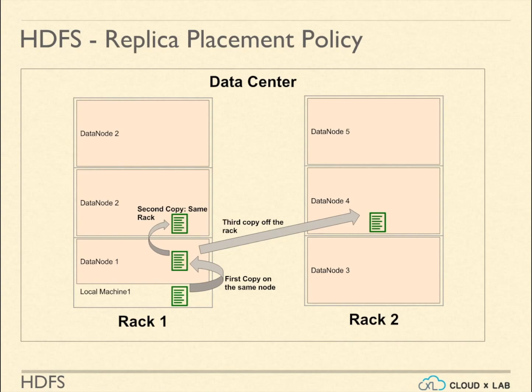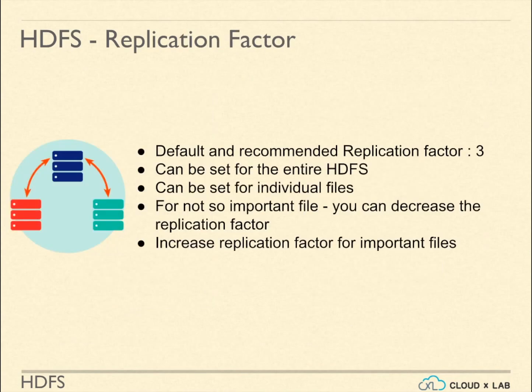A rack is an enclosure where we stack the machines, and all of these machines are in a local area network. It is advised to set the replication factor to at least 3 so that even if something happens to the rack, one copy is always safe. We can set the default replication factor for the whole file system as well as for each and every file individually.